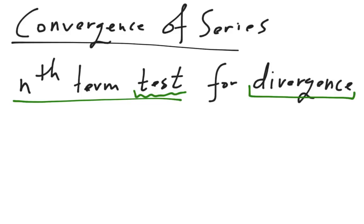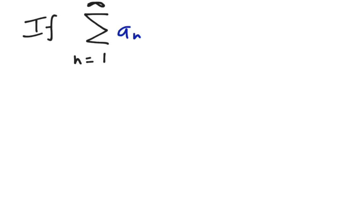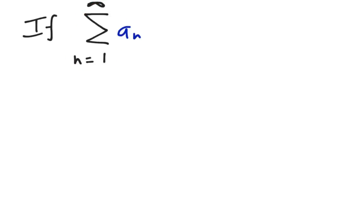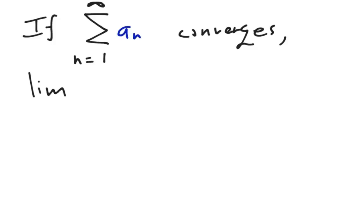Here's how the nth term test works. Let's say we have a series — a series, remember, is a sequence a_sub_n, and we're adding them up with the sigma notation. If the series a_sub_n converges — so let's say that eventually we're adding up an infinite amount of numbers and it converges to a single number — that means that the limit as n approaches infinity of the sequence a_sub_n must be zero.